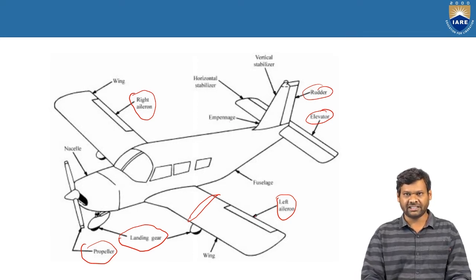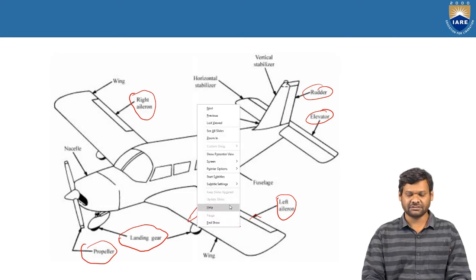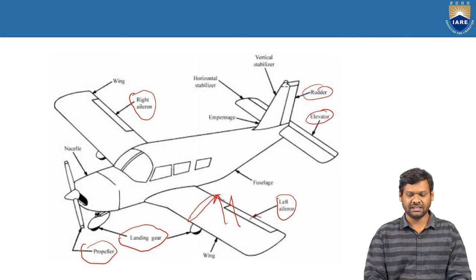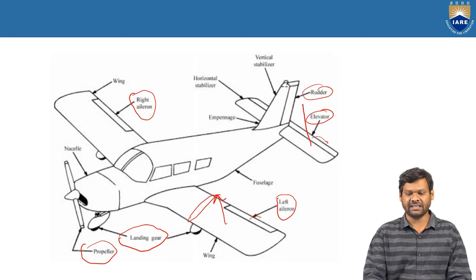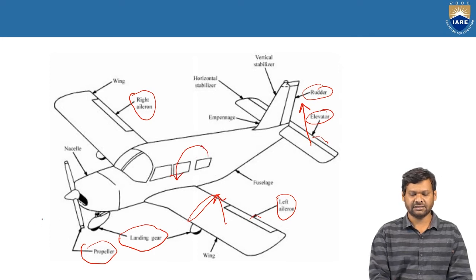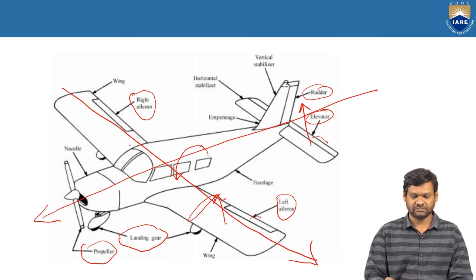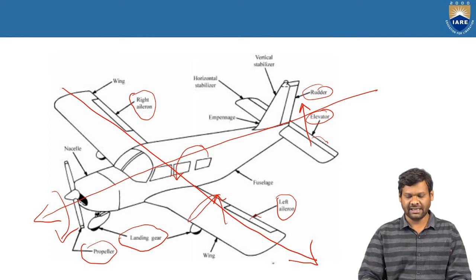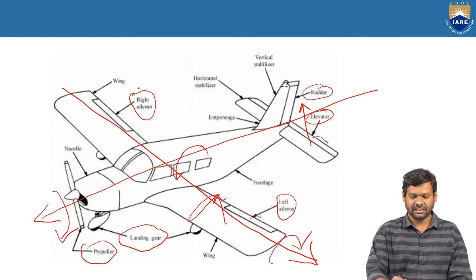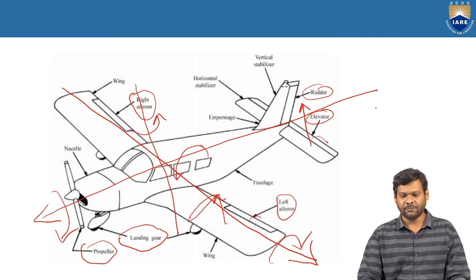If one wing's aileron is deflected, as a result there is a change in the lift force, and a rolling motion is obtained. When an elevator is deflected downwards, the lift on the elevator increases and the airplane rotates along the lateral axis. This is the longitudinal axis, the axis along roll, the axis along pitch, and the axis along yaw. Yaw can be obtained by the rudder. We have now identified the main components of an aircraft.